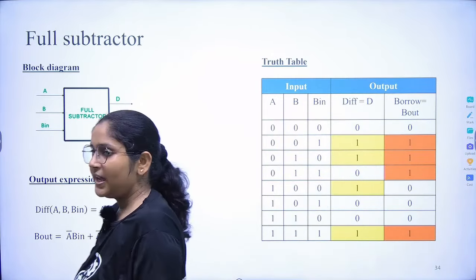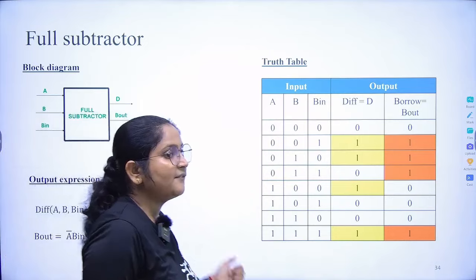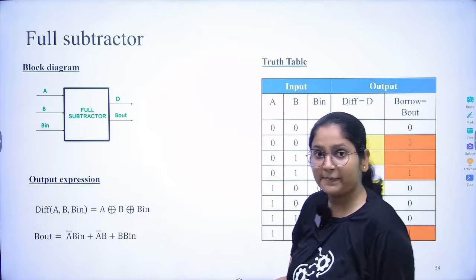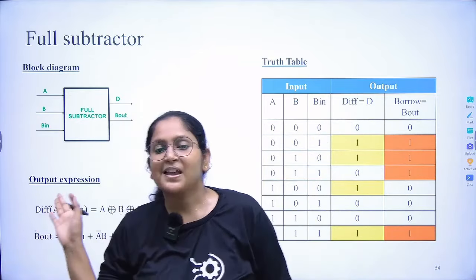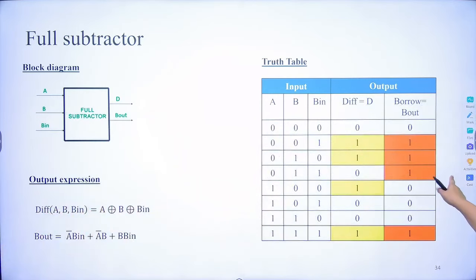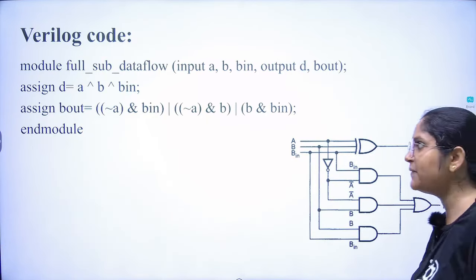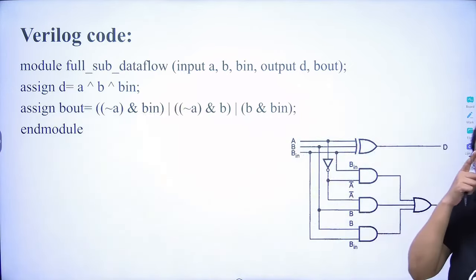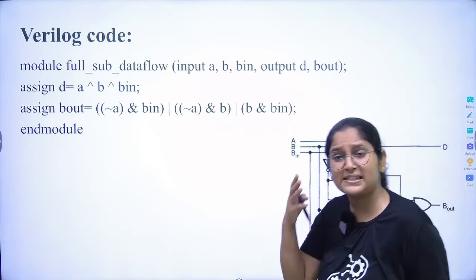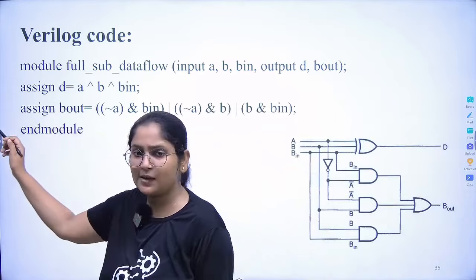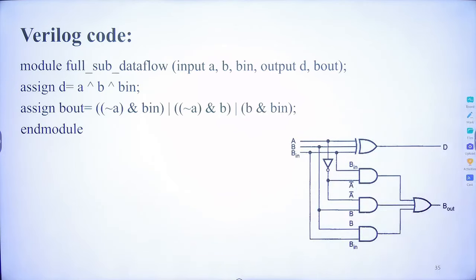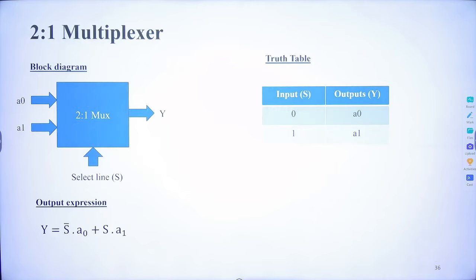For the full subtractor, the difference expression is a XOR b XOR b_in, and the borrow expression is: a_complement·b + a_complement·b_in + b·b_in. Writing the code for full subtractor using assign statements will be a cakewalk. Just use the assign keyword with your boolean expressions.